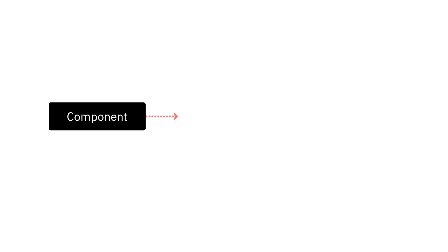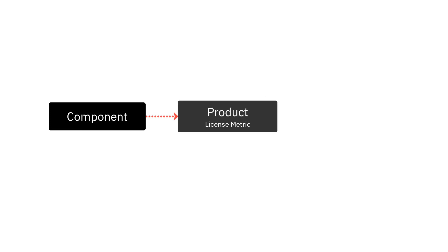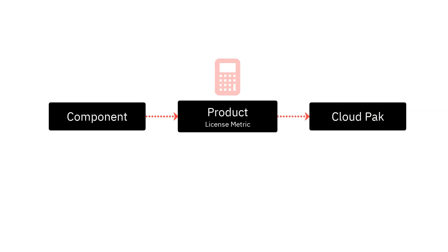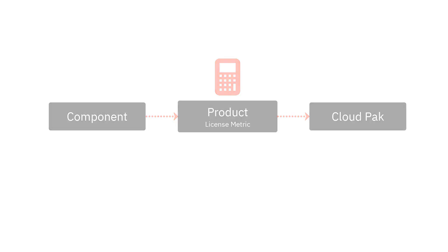Before you classify products for which standalone licenses were upgraded to a Cloud Pak license, create the Audit Snapshot. When you classify the products, metric utilization is recalculated for the past as if the products have always been a part of the Cloud Pak, which is not the case. Creating the Audit Snapshot allows you to maintain continuity of reporting.